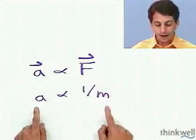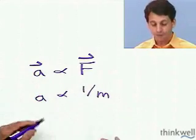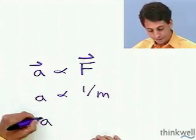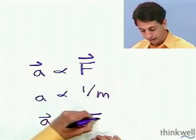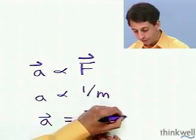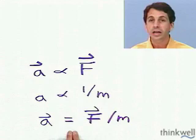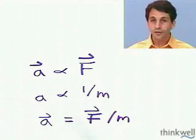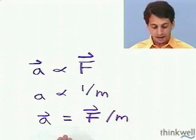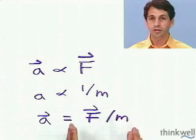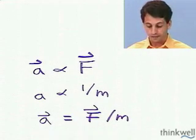I can combine these two and say that acceleration is proportional to F over m. And let me write it like this: a equals F over m. Now how do I know I can write an equal sign here? First of all, you have to experimentally convince yourself that acceleration depends on nothing else, no other details besides force and mass.